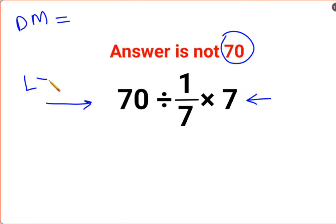You have to follow the pattern of left to right. Whatever operation happens first on your left hand side has to be done first. So first we will do 70 divided by 1 upon 7.